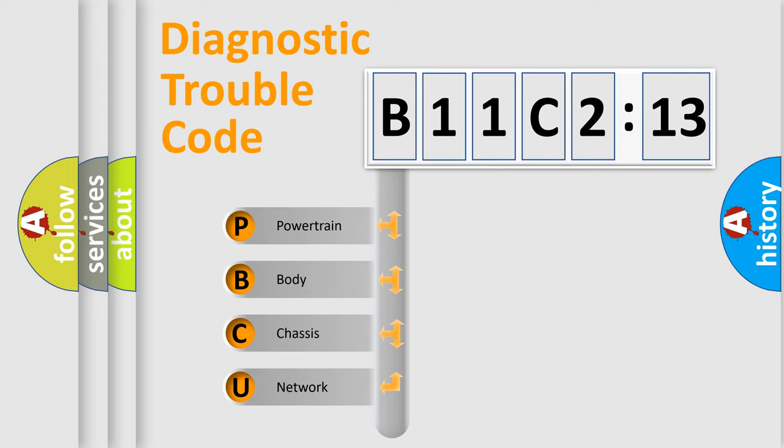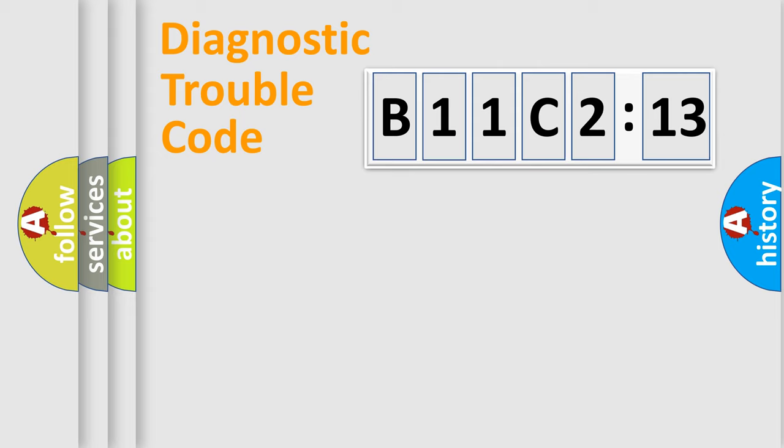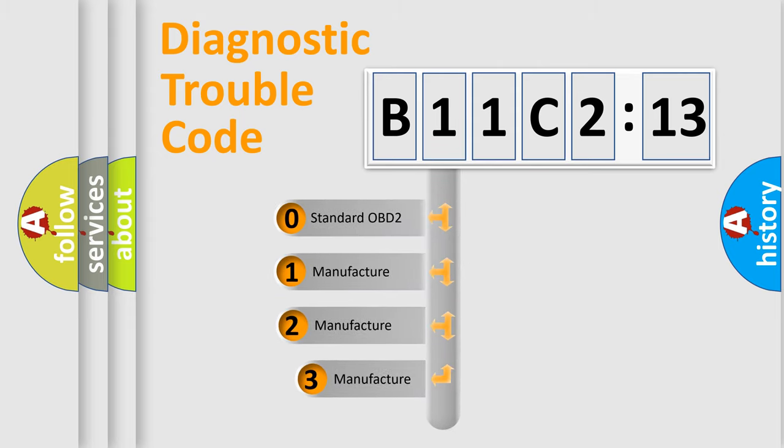We divide the electric system of automobile into four basic units: Powertrain, Body, Chassis, and Network. This distribution is defined in the first character code.